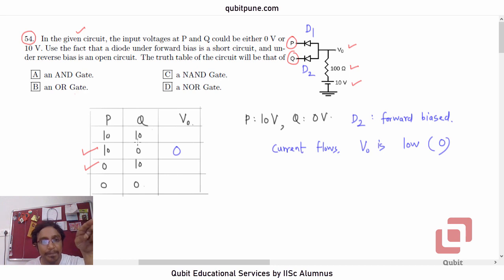And similarly, if we say that P is 0V and Q is 10V, what will happen? The current will flow through P or through the diode D1, and then the output V0 will again be low. So for P 0V and Q 10V, we have marked that for both of them, 10-0 and 0-10, the output will be low.